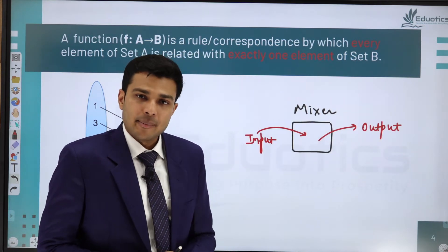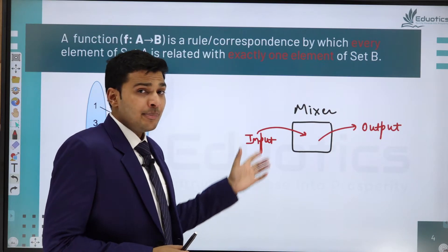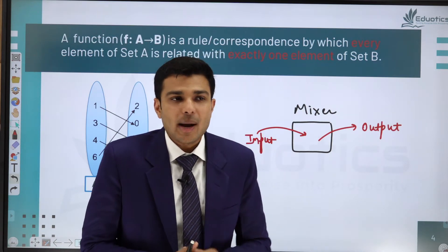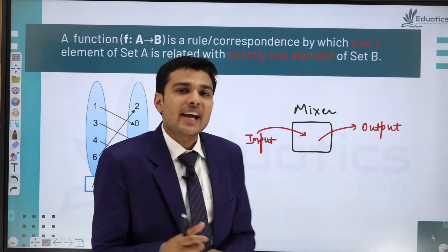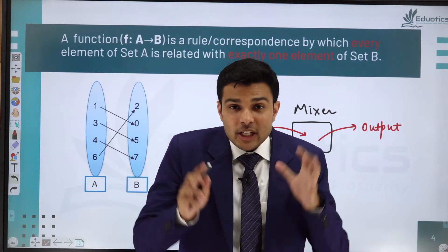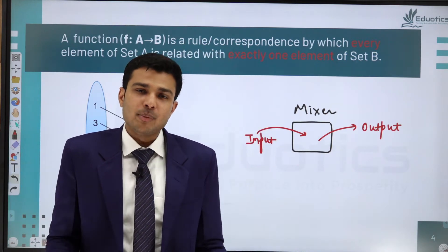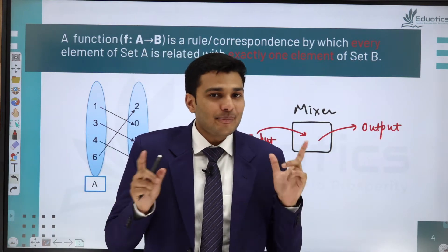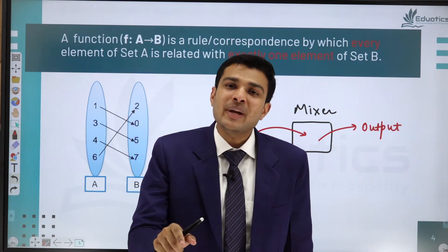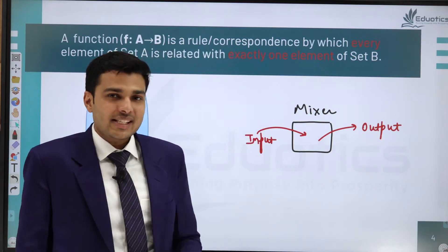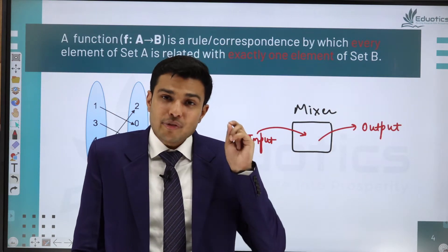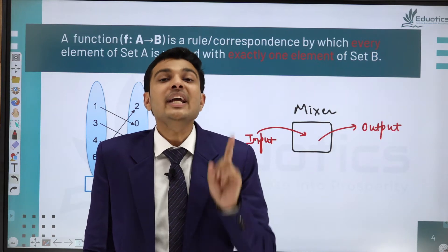For one input, only one output is obtained. Also, if you put stones into a mixer, the mixer could break — that mechanism is not built to grind stones. So the input must be valid. There should be valid input to the function, and for every valid input there should be an answer, and that answer should be only one answer.